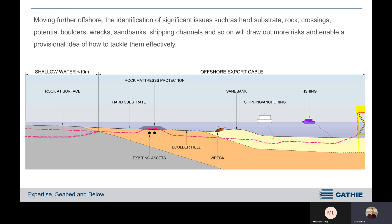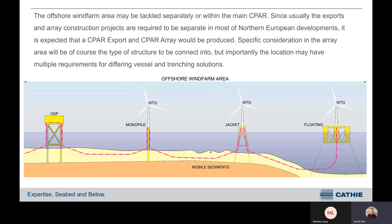Moving further offshore, the identification of significant issues such as hard substrate, rock crossings, potential boulders, wrecks, sandbanks, and shipping channels is going to draw up more risks and enable a provisional idea of how to tackle them and price them effectively. In the offshore wind farm area, it may be tackled separately or within the main CPAR. Since export and array construction projects are generally required to be separate in most Northern European developments, it's expected that a CPAR export and a CPAR array would be produced. Specific consideration in the array area will be the type of structure to connect into, and this location may have multiple requirements for different vessels and trenching solutions.